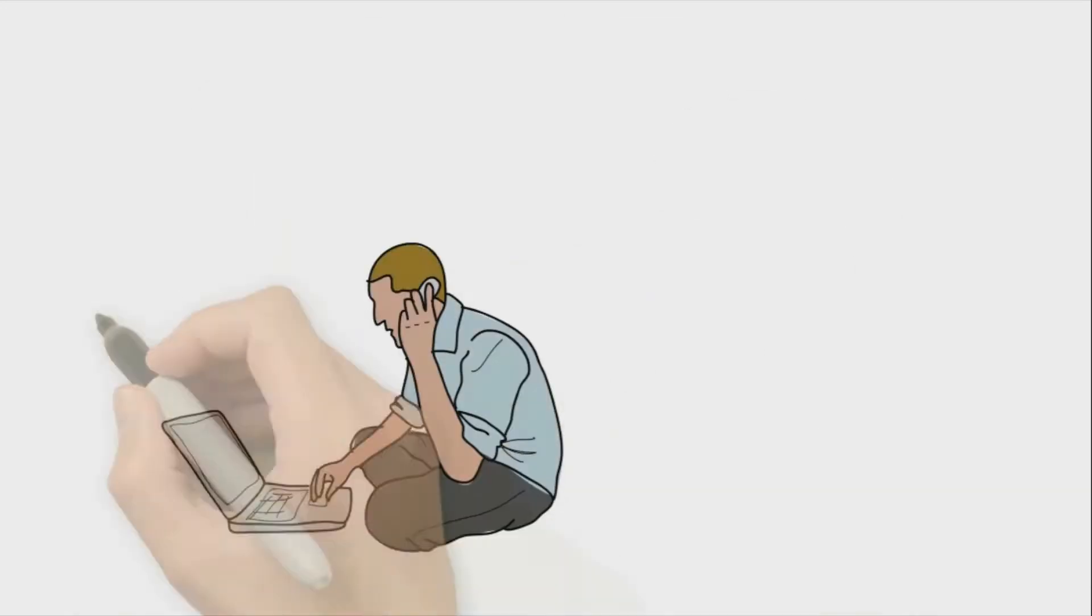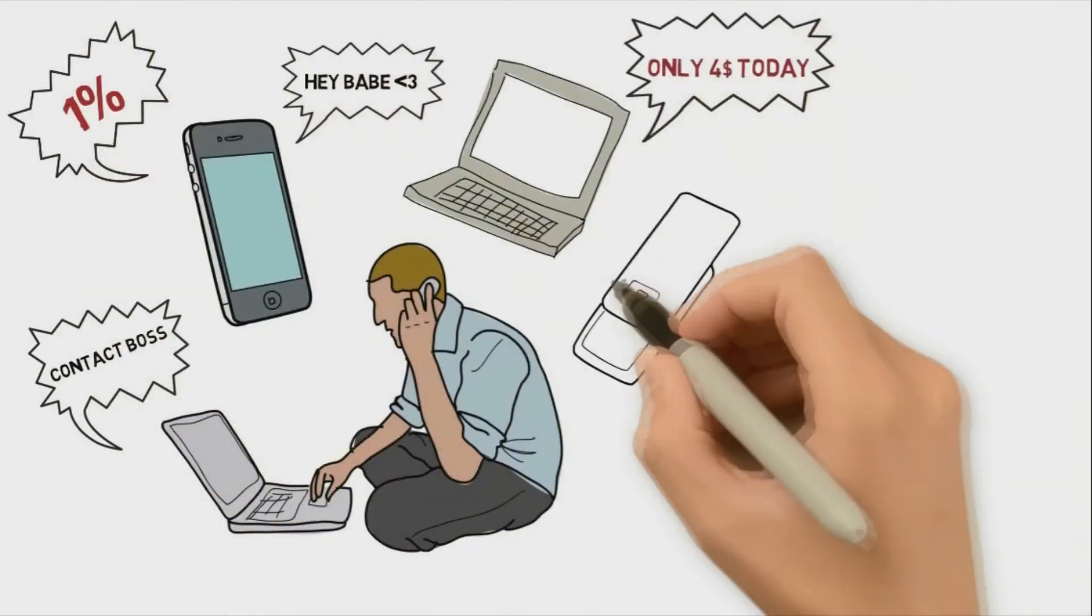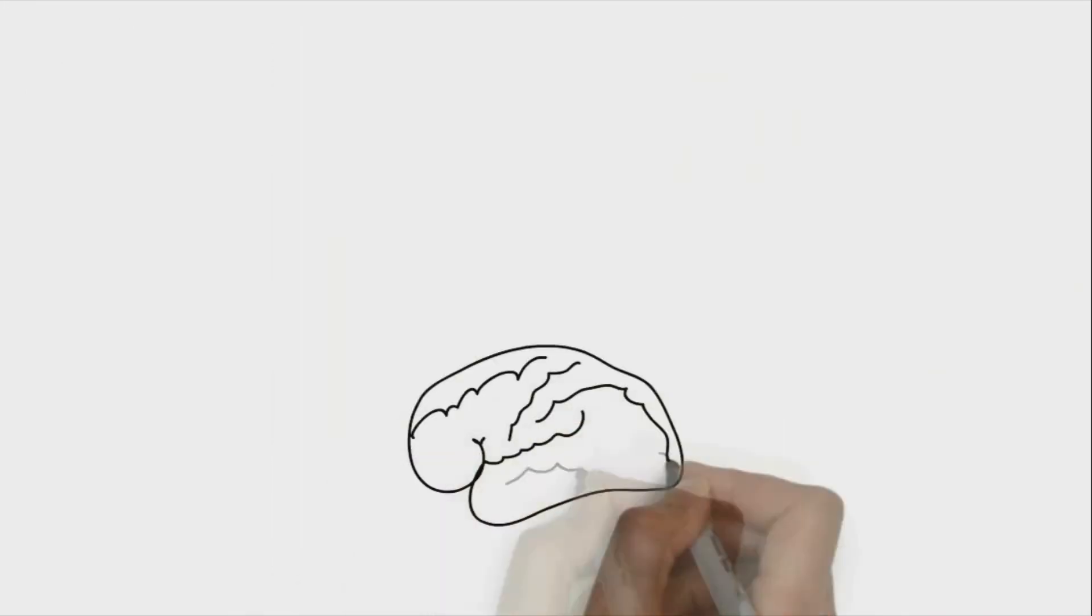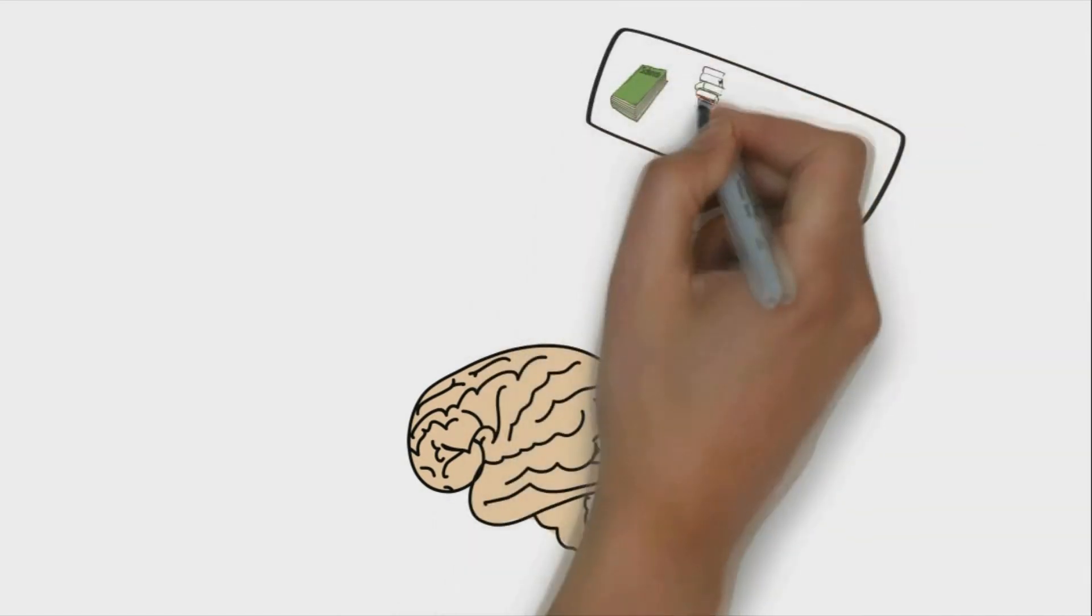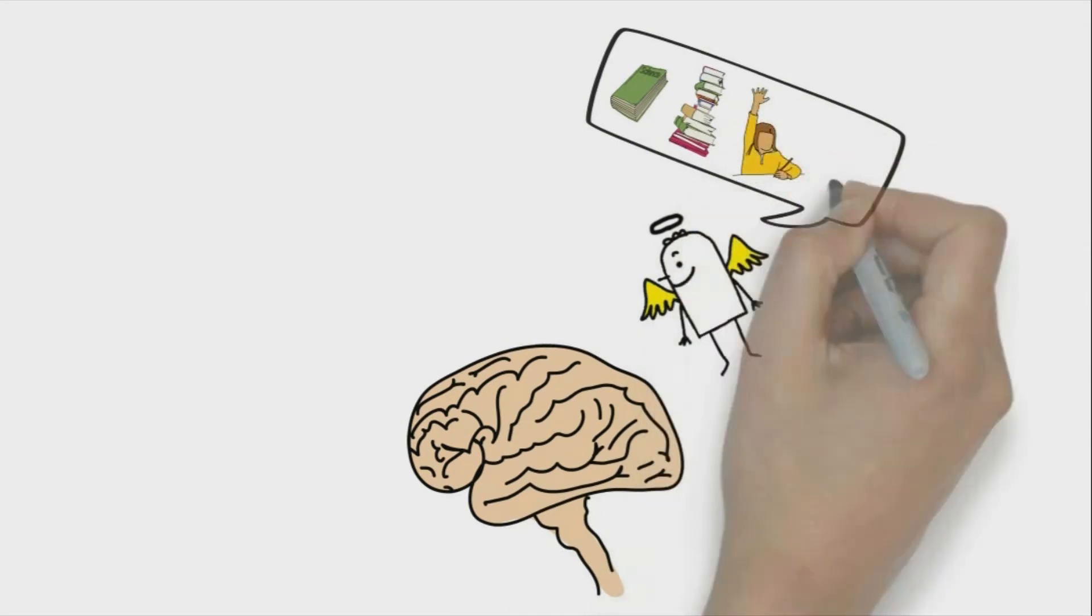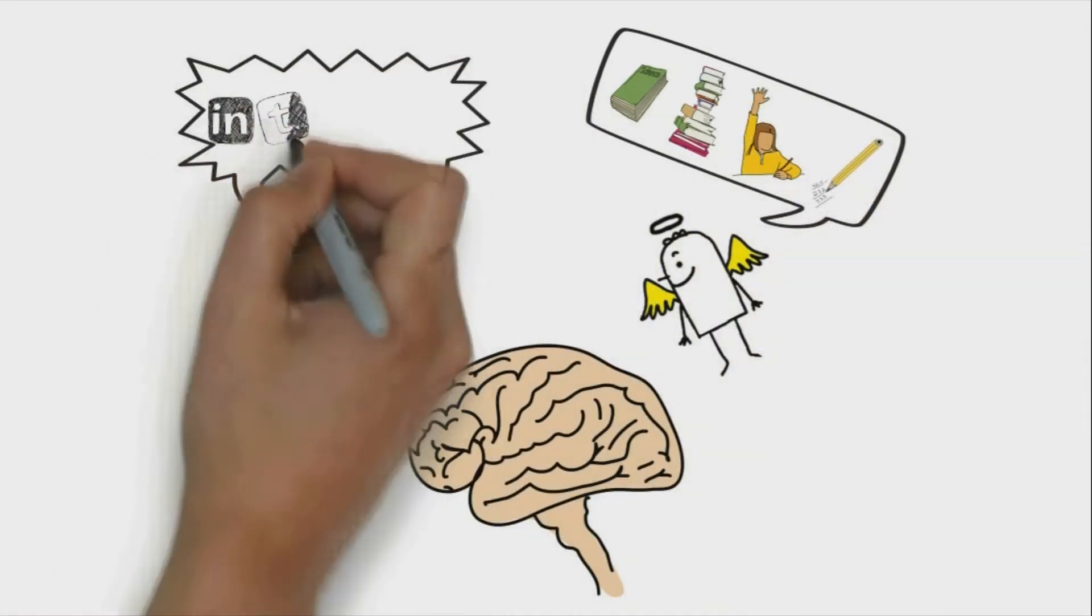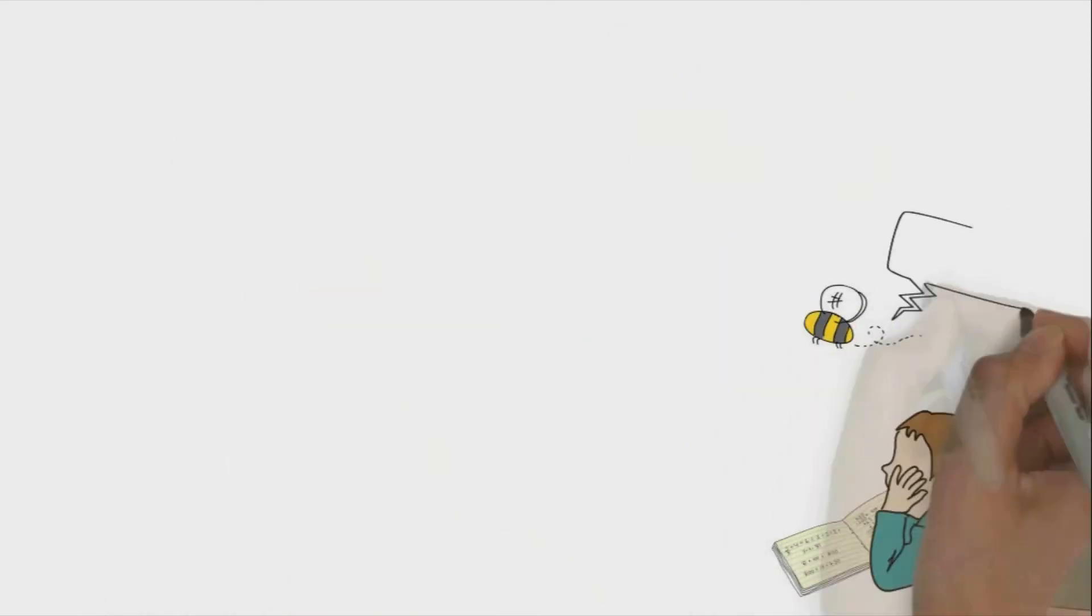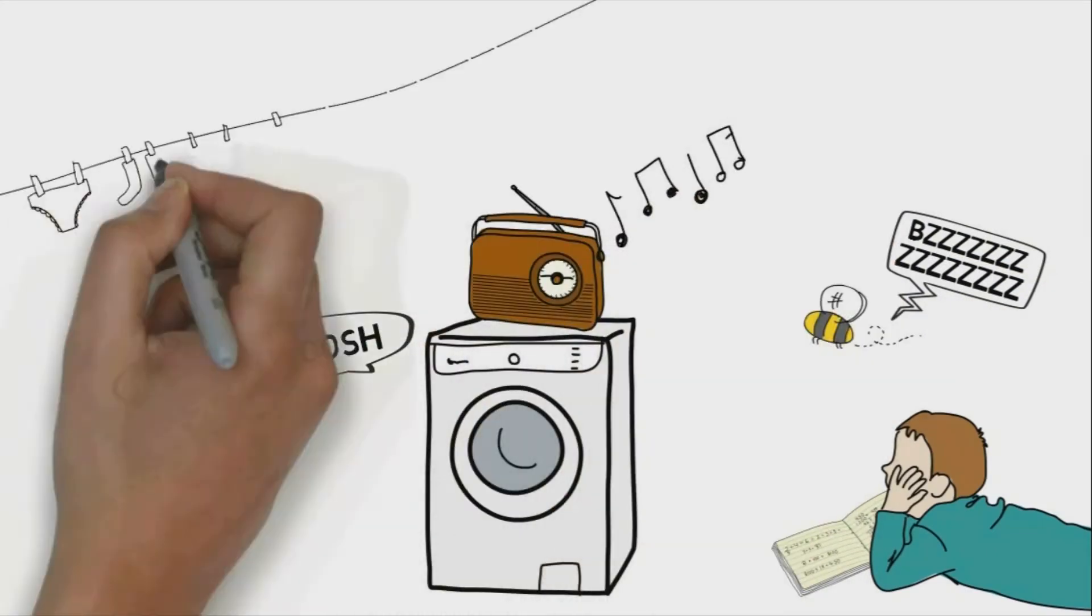We are told that the internet increases and even causes ADHD because of the numerous distractions it offers. You'd be surprised - the internet is not to blame for ADHD. Our attention system has two parts: the dorsal attention system, which focuses on one object or mission, and the ventral attention system, which reacts to random and unexpected distractions. The internet creates distractions, but they're no different from those humans dealt with before the internet.